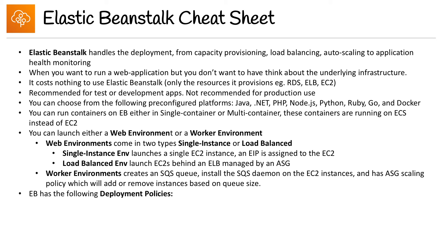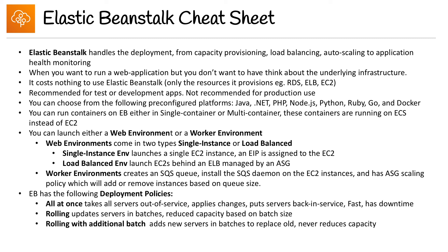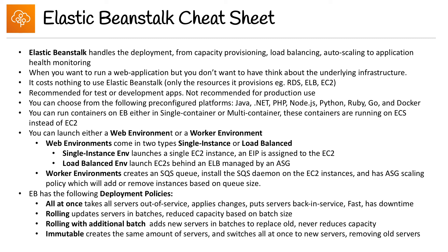EB has the following deployment policies. All at once takes all the servers out of service, applies changes, and puts servers back in service — this is super fast but has downtime. Rolling updates servers in batches, reducing capacity based on batch size. Rolling with additional batch adds new servers in batches to replace the old ones, never reducing capacity. Immutable creates the same amount of servers and switches all at once to the new servers, removing the old ones. You really need to know these deployment policies inside and out, so make sure you know the difference.